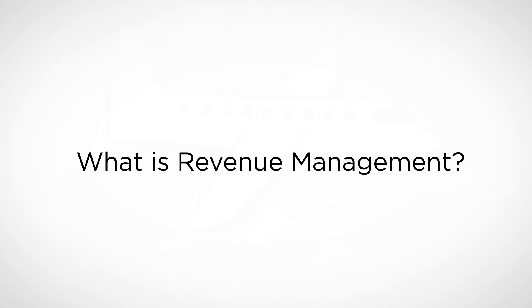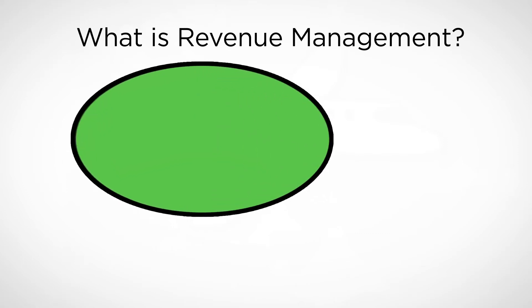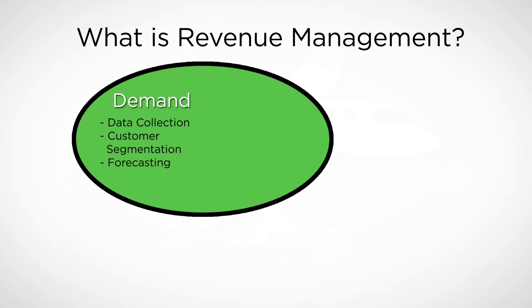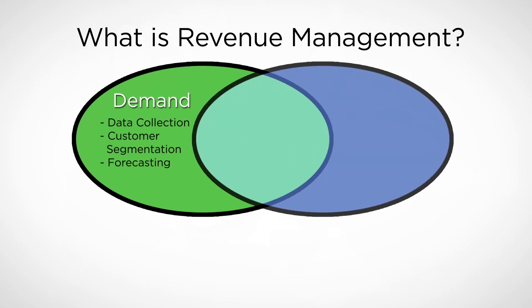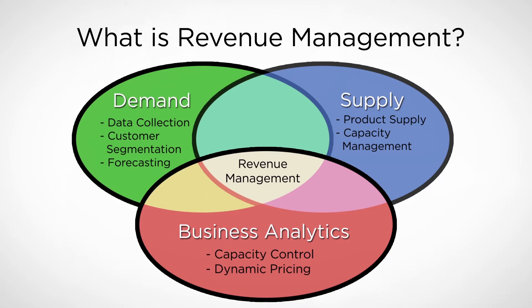There are three key components to revenue management. One is a demand and forecasting component, which is essentially about understanding your consumers. The second is a supply component, about understanding your capacity. And finally, a business analytics component, which covers the tools that companies use to think about matching demand and supply.